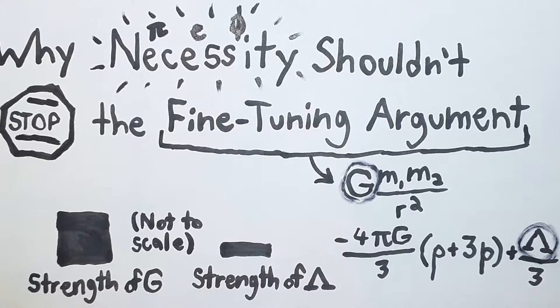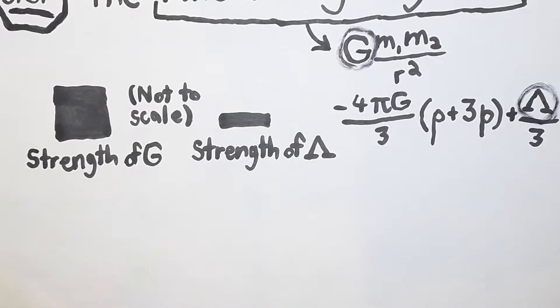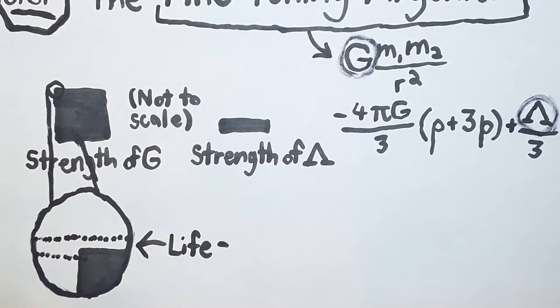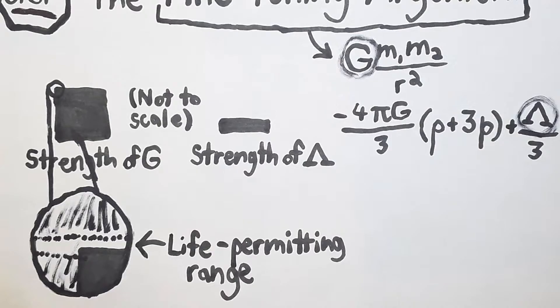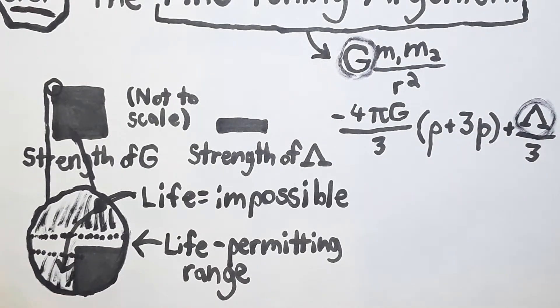Obviously if the strengths of these constants were very different, no life could exist. An obvious example is if gravity were super strong we'd all be crushed. But it turns out the strengths of these constants have to fall into a very small life permitting range for life to be able to occur. If it were any stronger or weaker life would not be possible.